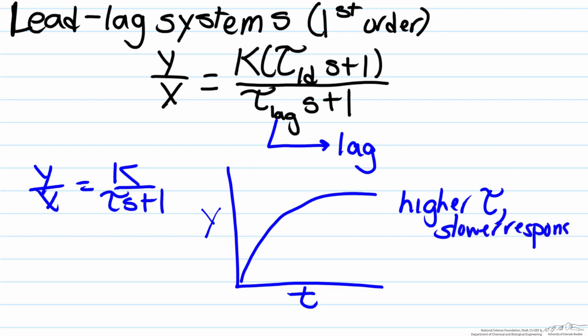In other words, the dynamics of the denominator, that tau value, act as a means to slow down the response, which is indicated by the fact of its presence in the denominator.